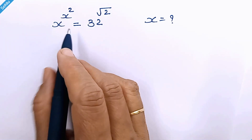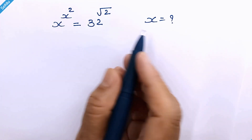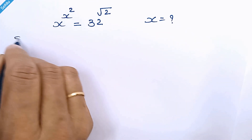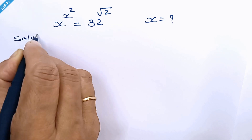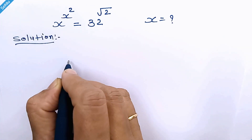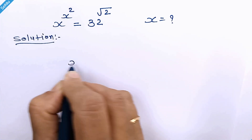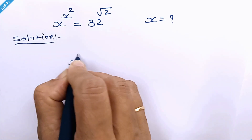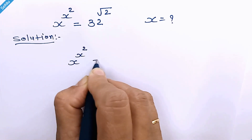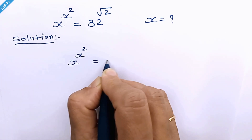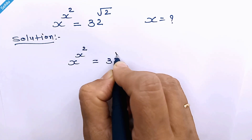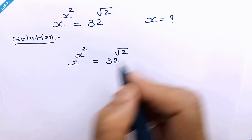Hello friends, let's solve this. Our question is x raised to x square is equal to 32 raised to square root of 2.